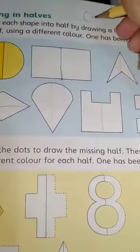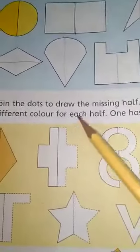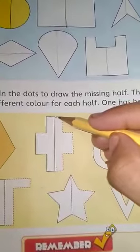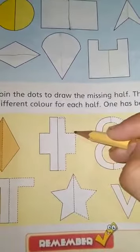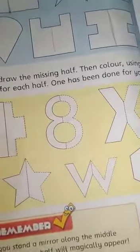This is your work to make shapes. I put some shapes here. Join the dots, missing half. You can join, you can do here, work.